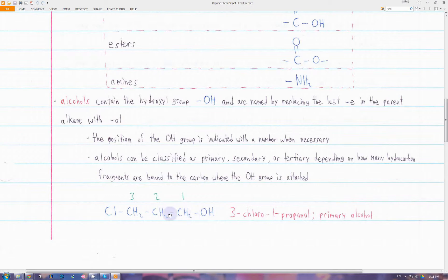This depends on how many hydrocarbon fragments are bonded to the carbon where the OH group is attached. For example, we have this alcohol here. The parent alkane, the longest chain, is just three carbons, so this is a propane-based alcohol. We want to give the OH group the lowest number possible, so we start the numbers over here.